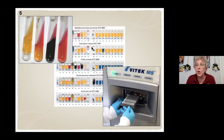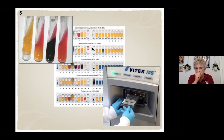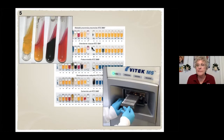Soil is the same way — digesting an oak leaf is different from digesting an elm leaf or a twig. All of those require a mix of organisms that are each able to digest at least part of what they're presented with.